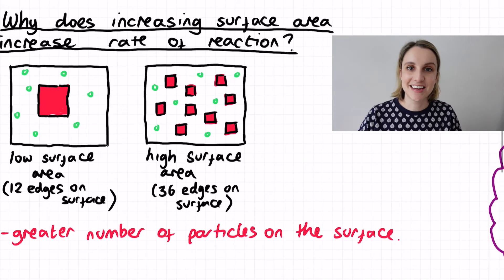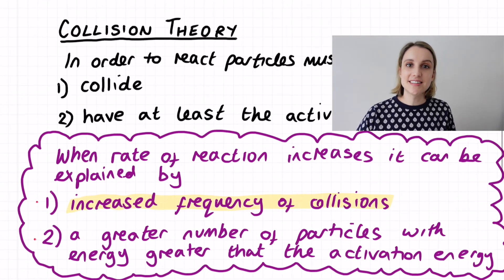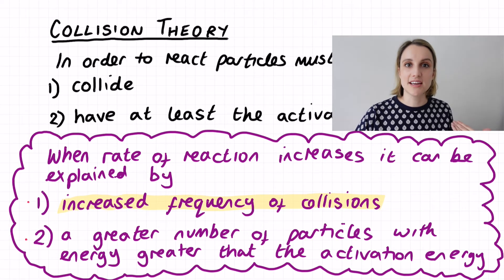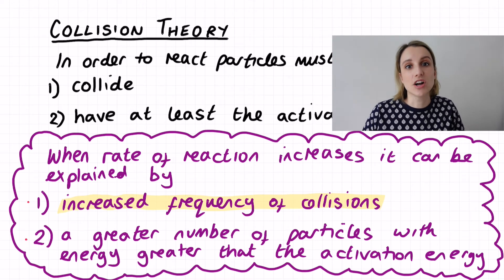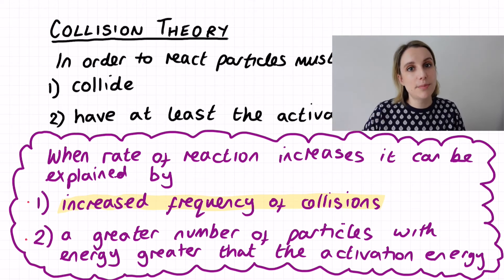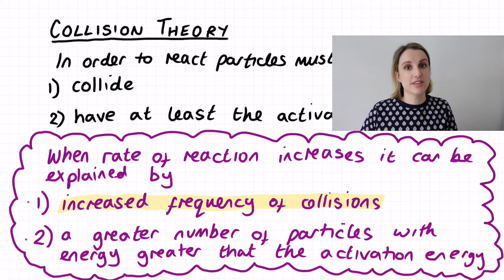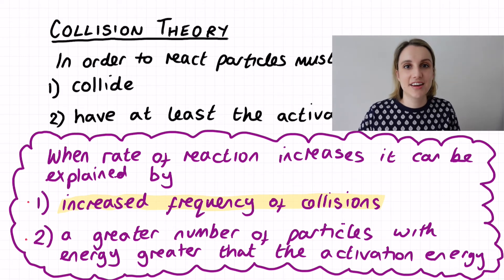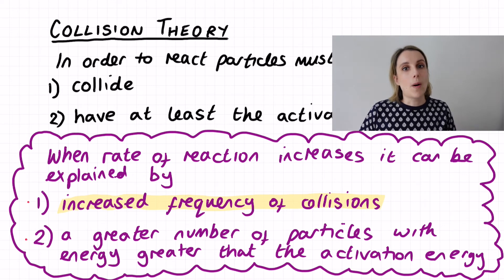So back to our collision theory information here. We can see that this time what we're doing is we're exposing more of the surface; there's more particles on the surface. So that means that the chance that the green particles will collide with the red ones is significantly greater. We say that this time we've got more frequent collisions occurring.